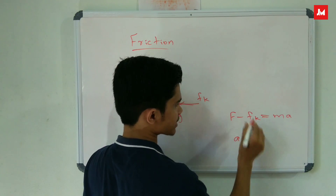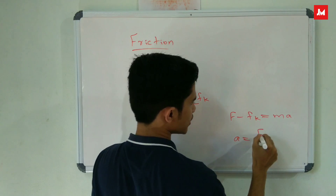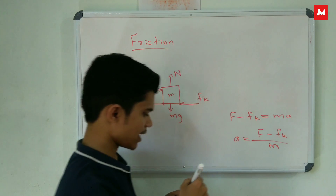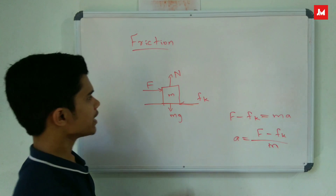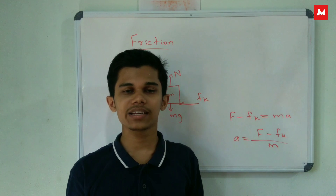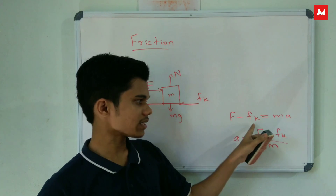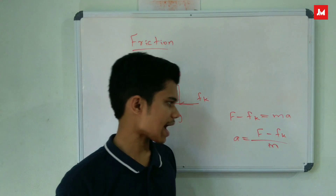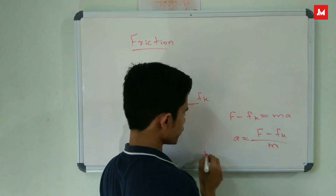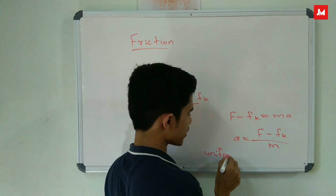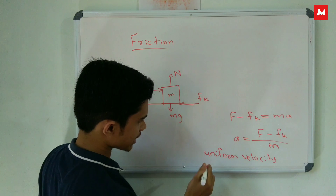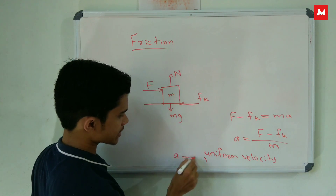The acceleration of this body is: a = (F - Fk) / m. The object's acceleration depends on the applied force and kinetic friction. If kinetic friction is balanced with applied force, it results in uniform velocity.